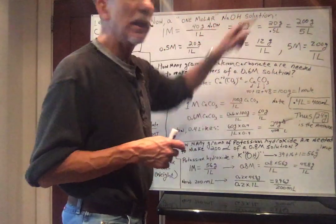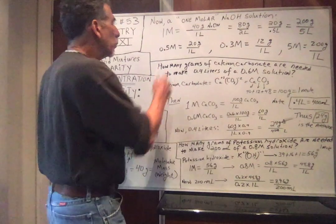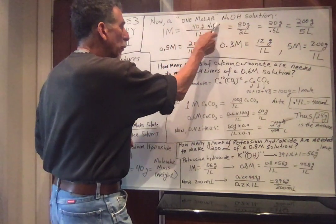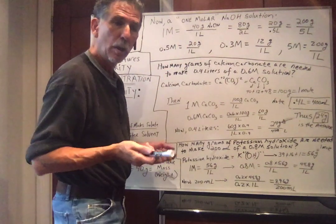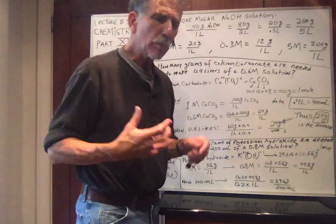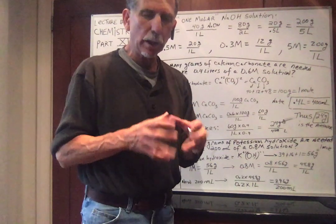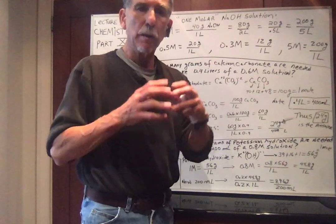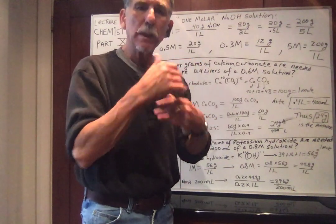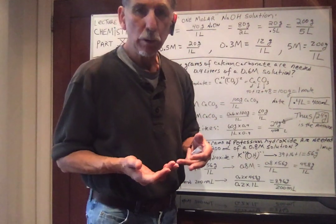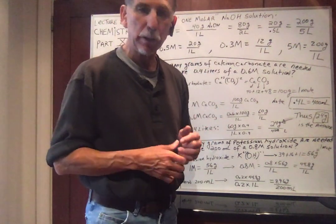Now, a one molar NaOH solution. What does one molar NaOH solution mean? Well, one molar means you put one mole of NaOH, which is 40 grams, we just calculated, in one liter. But just as I said about coffee and sugar, if I take two sugars and a cup of coffee, if I have twice the size of the cup, two cups, instead of two sugars, I'd need four. If I had half a cup, I'd need one sugar to keep the same concentration.